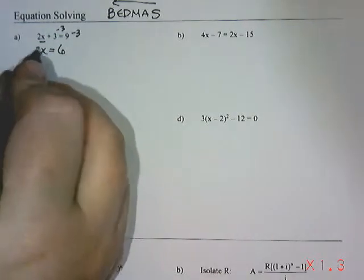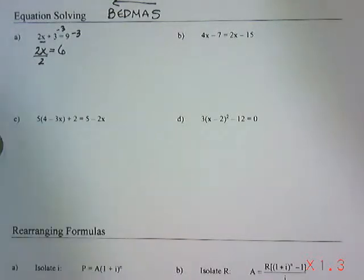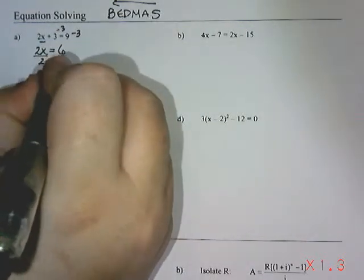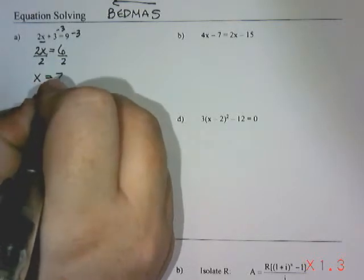And then to eliminate that 2, I'm going to divide, that's the opposite operation, by 2 on both sides. And I get that x equals 3.